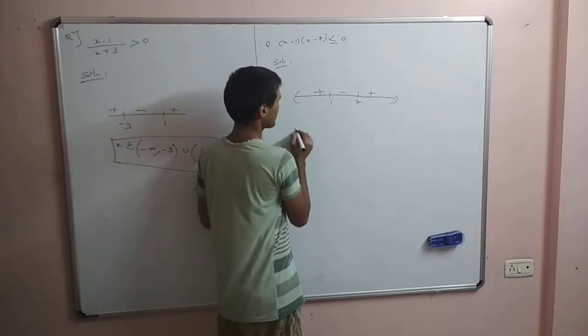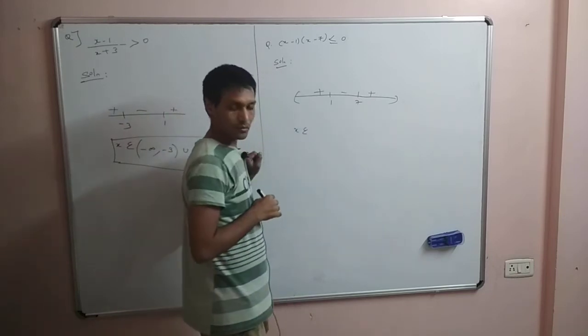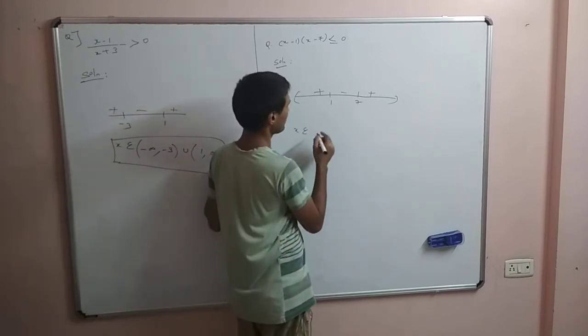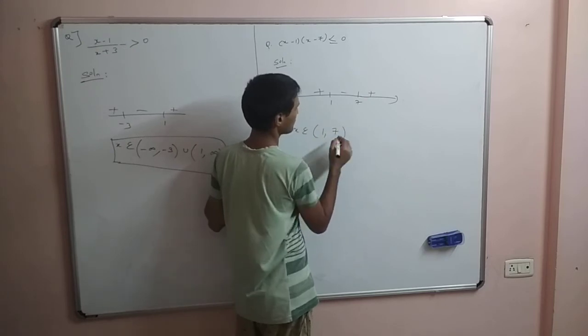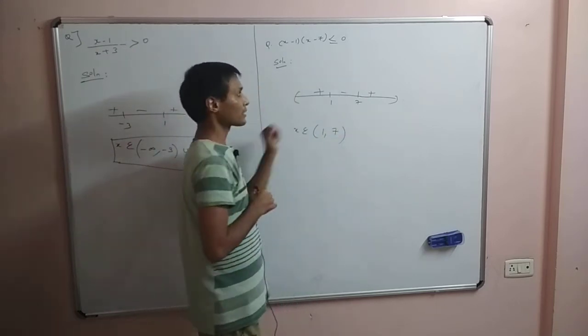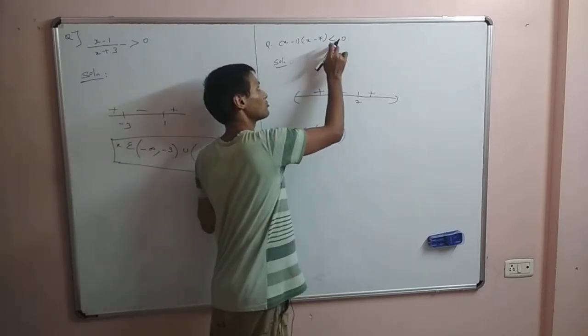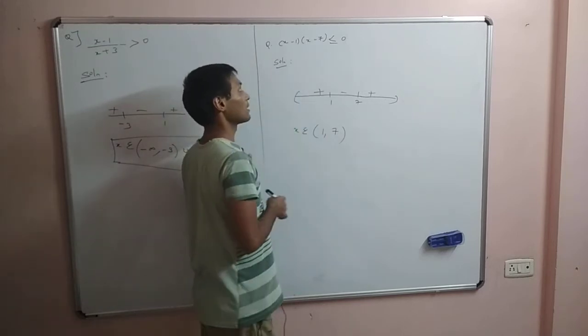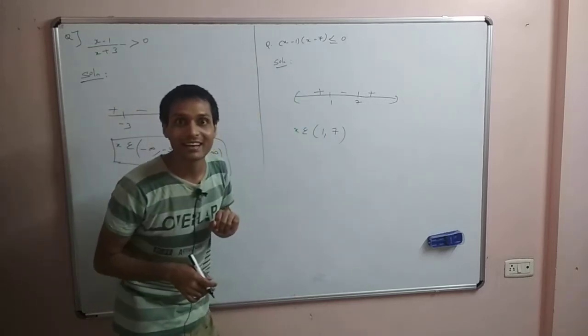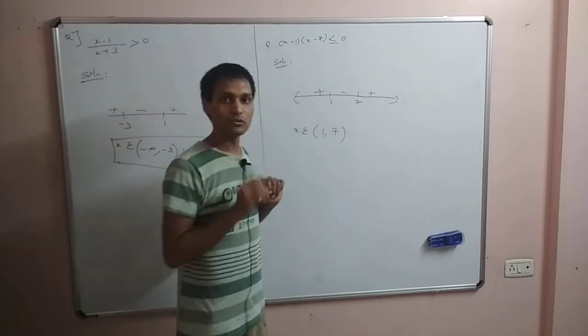x belongs to x belongs to x belongs to 1, 7. 1, 7. 3, 7, 2, 7.